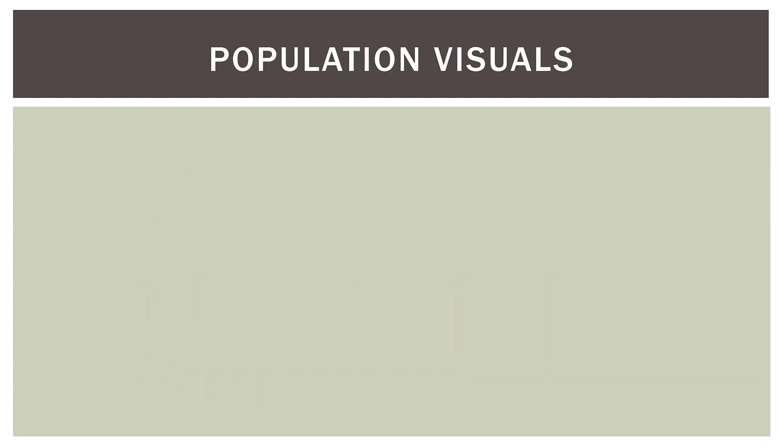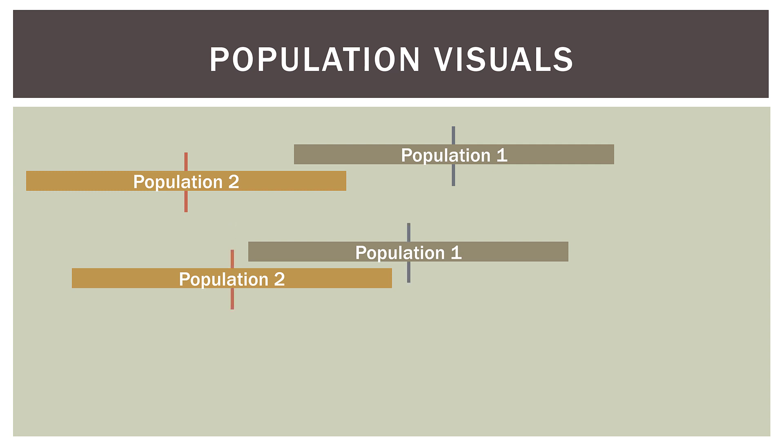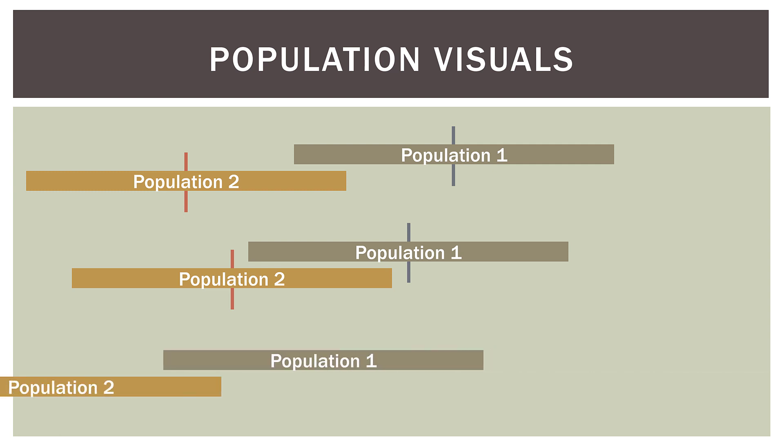Let's look at some visuals so you can envision this. In the first case, we have population one on the right and population two on the left, with each median denoted by a vertical line. Notice there's not much overlap, and the medians are pretty far apart. In the second case, the populations are a bit closer together, so there is some overlap in the middle, and the medians are closer in distance.